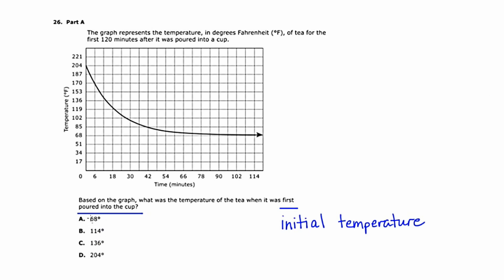So if we look at time equals zero, that would be the very beginning of the problem. We can read up on the graph and notice that at time equals zero, the temperature of the tea was 204 degrees Fahrenheit. So for that reason, I'm going to pick answer choice D, which is 204 degrees.